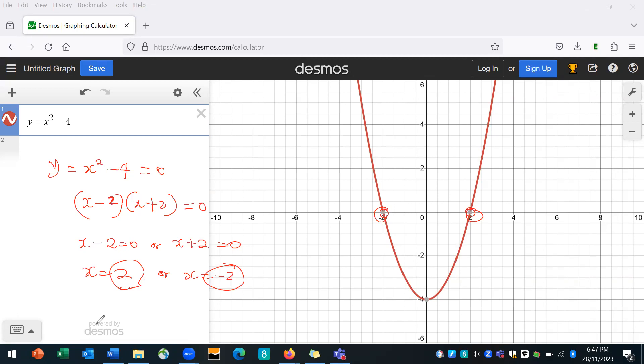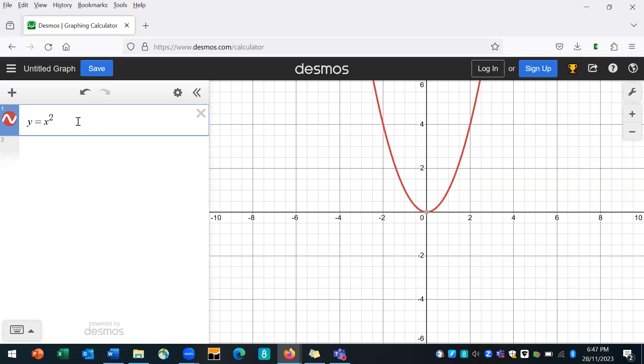So you can see how the function responds to certain transformations. Now, what happens if instead of adding to y, I add to x? So then I have something that looks like x plus 4 squared. You can see what has happened. Now, the function has moved along the horizontal. So it moves from 0 to a new position here on the x-axis.